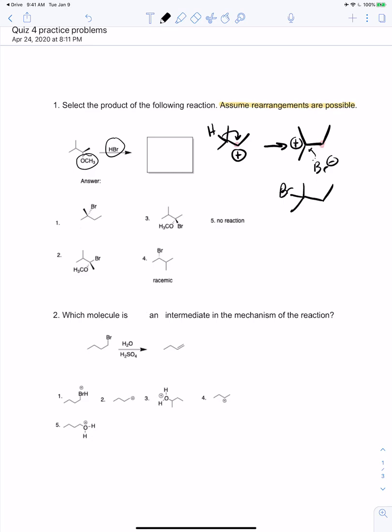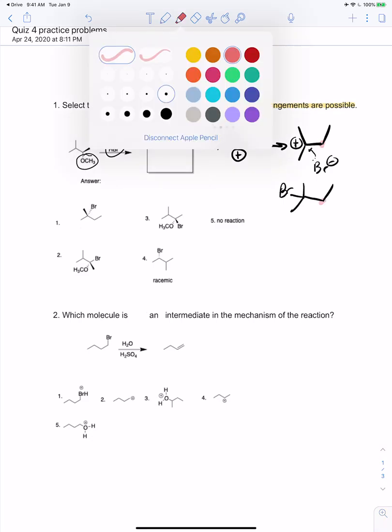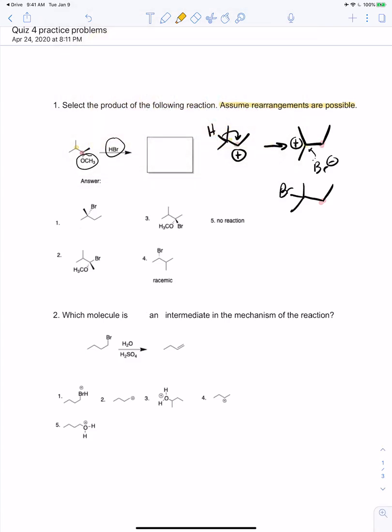So one thing to note about this product - you'll notice that the bromide is actually on the carbon that's beta to the original carbon that the leaving group is attached to. This molecule that we formed is not chiral. So if we look at the orange carbon, which is the one that might look chiral, notice that it has two methyl groups on it.